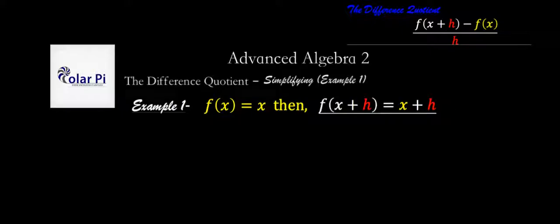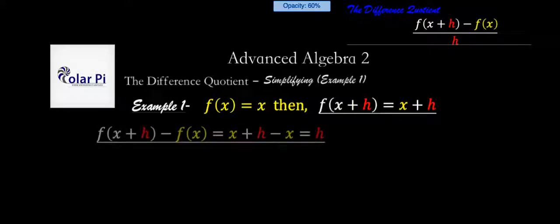So then f of x plus h minus f of x, the numerator of the difference quotient, will be x plus h, which is f of x plus h, minus x, which is f of x, and therefore simplifies to just h.